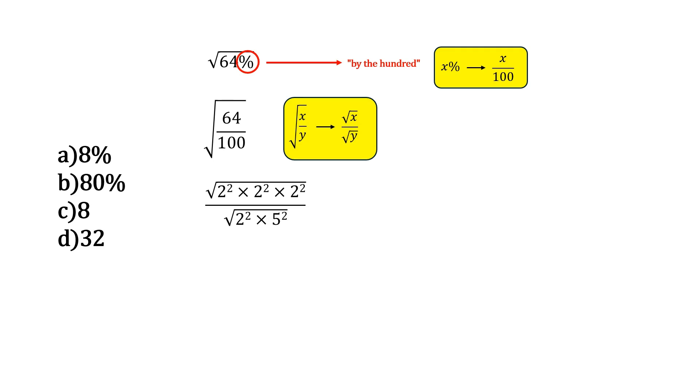Okay, so we have square root of 2 squared times 2 squared times 2 squared over square root of 2 squared times 5 squared.